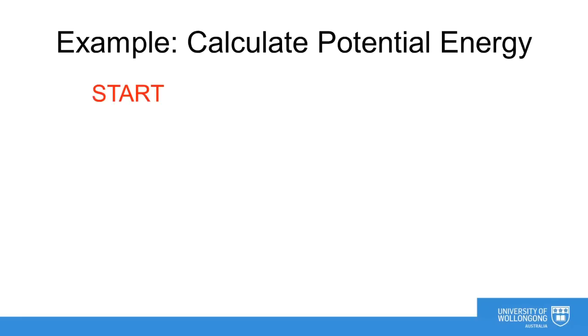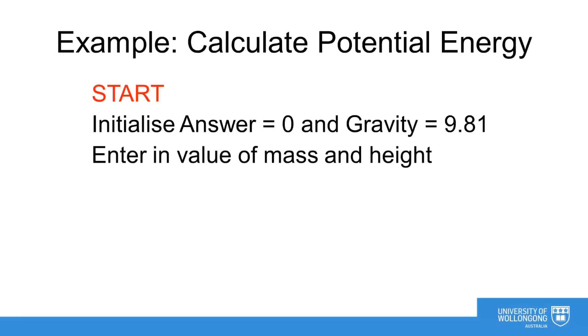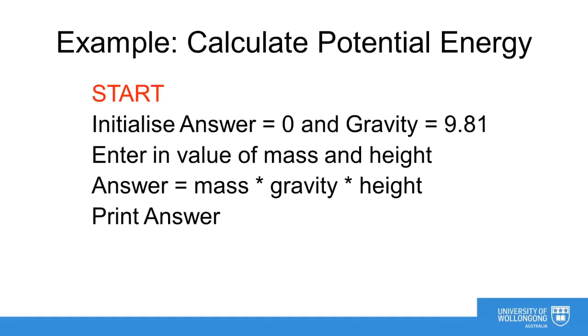When programming, when using variables, it is good practice to initialize all of them by assigning a value. We will assign our variable answer the value 0 as we don't know what value that will be and we assign gravity with the value 9.81. This is a process. The next step is to enter in our values for the mass and height. This is input output process. We then need to multiply the values of mass, gravity and height together and store the result. This is a process. We then want to print the answer. This is input output.